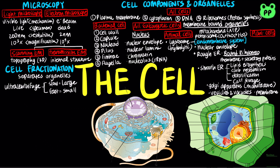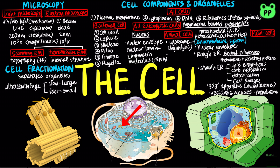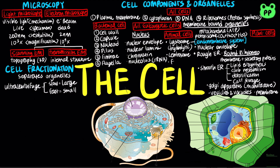Some unique components found in animal cells but not plant cells include centrosomes, which contain a pair of centrioles that serve as the main microtubule organizing centers. Microtubule is a type of cytoskeleton, which will be discussed shortly. Animal cells also contain flagella, which are structurally different from bacterial flagella, but also provide motility.